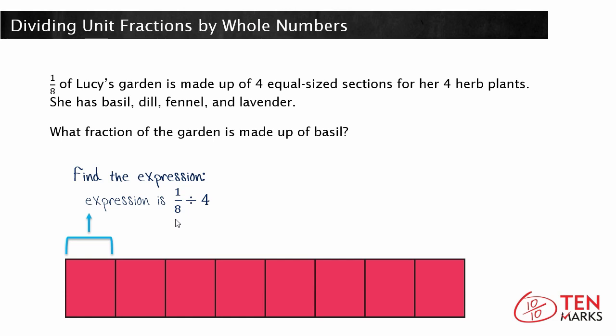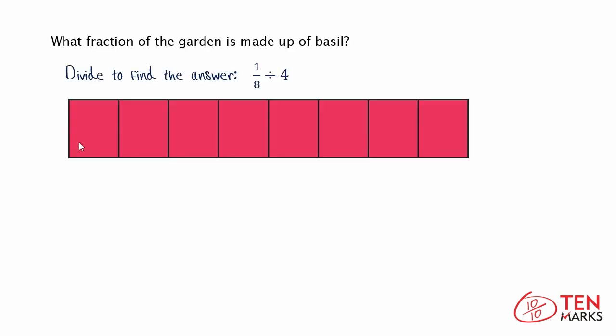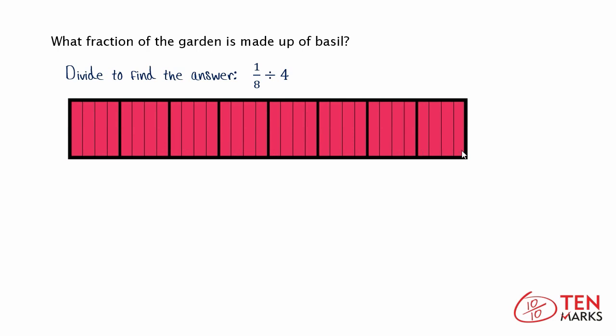But how do you actually divide a unit fraction by a whole number? Let's take a look at this problem visually. In Lucy's garden, as we said, you have eight equal sections. And here's the part that we said is devoted to herbs. If you have to divide this into four equal sections, you need to divide all eight sections into four equal sections. So you'll see that you now have 32 sections in Lucy's garden,